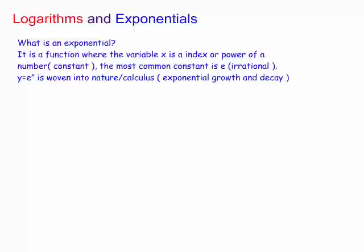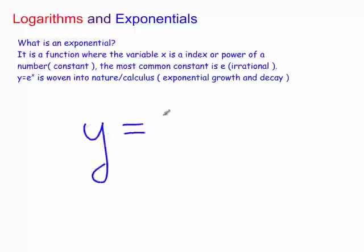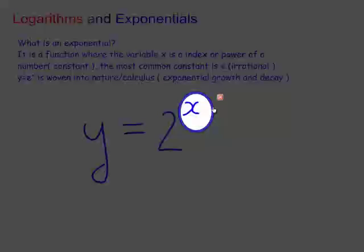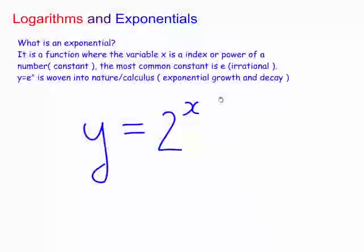But what is an exponential? It's a function where the variable is actually in the index. For example, y equals 2 to the x. This is a little bit unusual — usually the variable is not an index. You can see here it's now a power, up in the exponent. So 2 to the x is what's called an exponential.